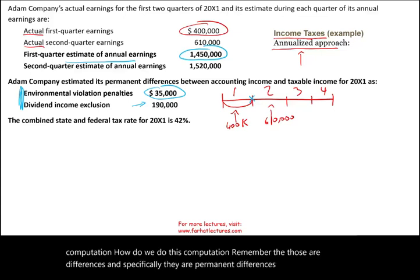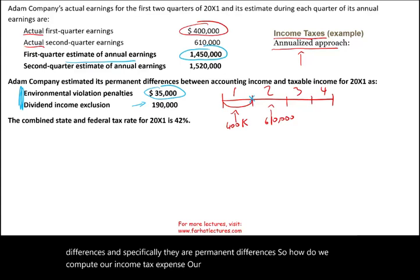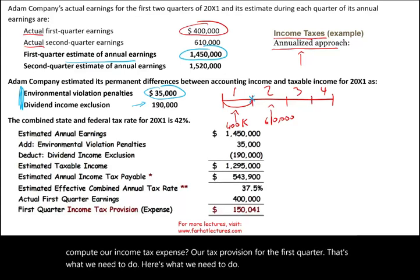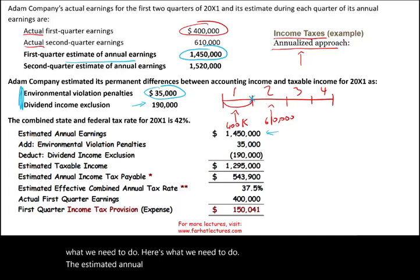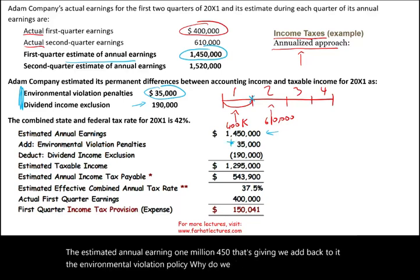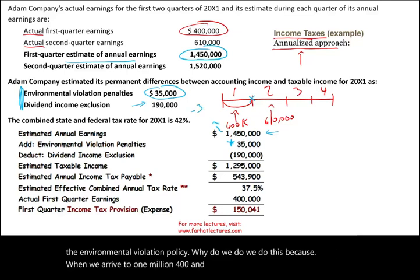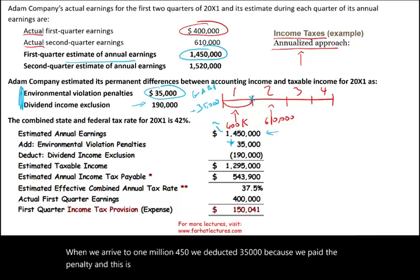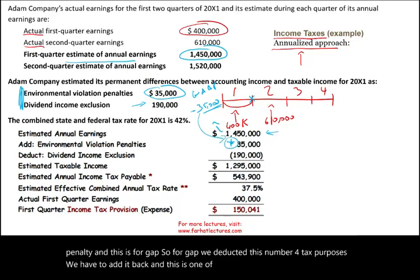How do we compute our income tax expense — our tax provision — for the first quarter? The estimated annual earning is one million four hundred and fifty thousand. We add back the environmental violation penalty of thirty-five thousand. Why? Because when we arrived at one million four hundred and fifty thousand, we already deducted the thirty-five thousand for GAAP purposes. For tax purposes, we have to add it back — this is one of the permanent differences.